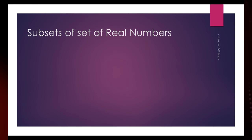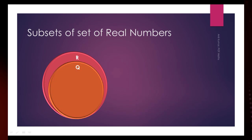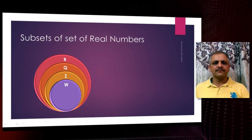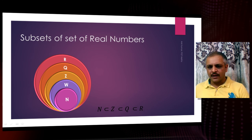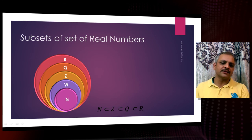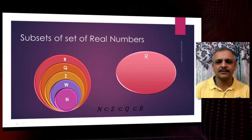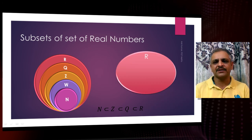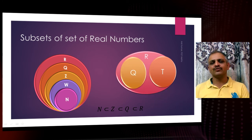Now, subsets of real numbers. The set of rational numbers Q is a subset of real numbers R. The set of integers is a subset of rational numbers. The set of whole numbers is a subset of integers. The set of natural numbers is a subset of whole numbers. So: natural numbers ⊂ integers ⊂ rational numbers ⊂ real numbers. Also, real numbers can be divided into two subsets: irrational numbers and rational numbers — both are subsets of real numbers.